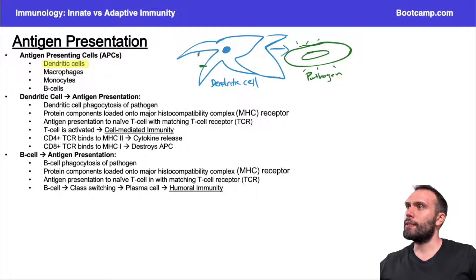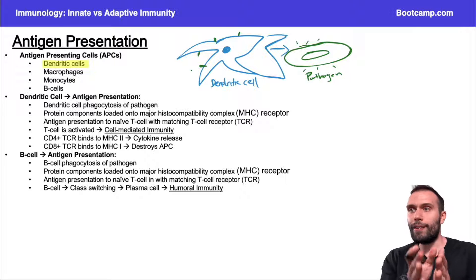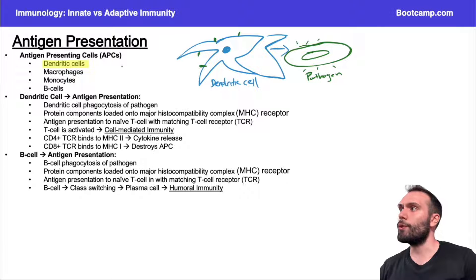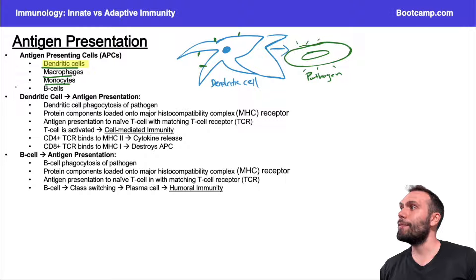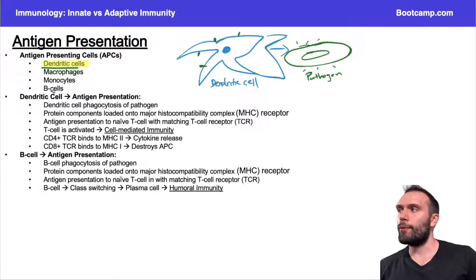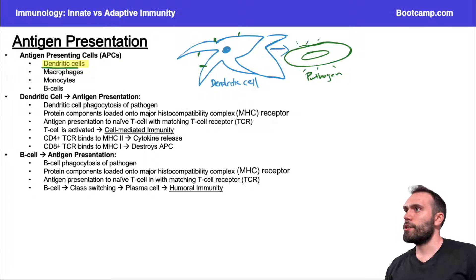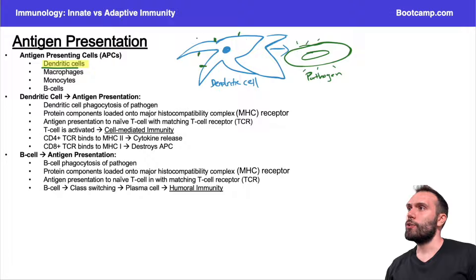It's important to know what cells actually undergo antigen presentation. The classic one is dendritic cells. But this could also be a macrophage in a tissue, a monocyte in the blood, or even a B cell. Neutrophils do not undergo antigen presentation. For now, let's stick with the dendritic cell — it's loading protein components from the digested pathogen onto its cell surface.